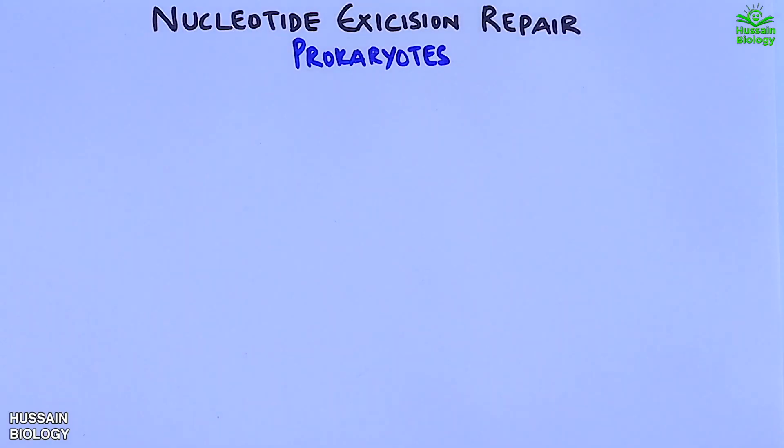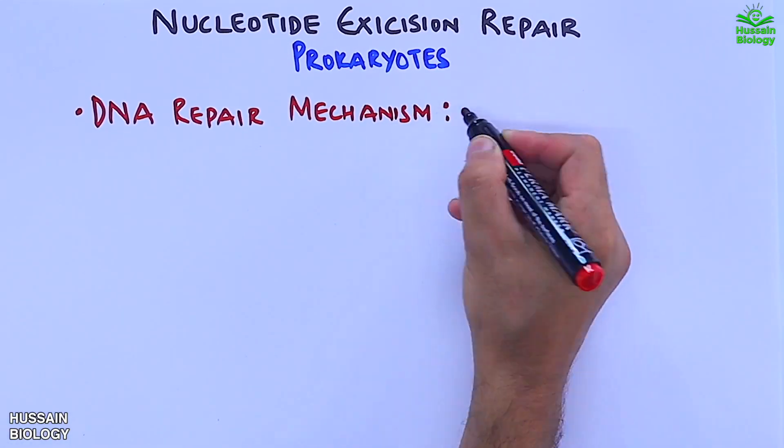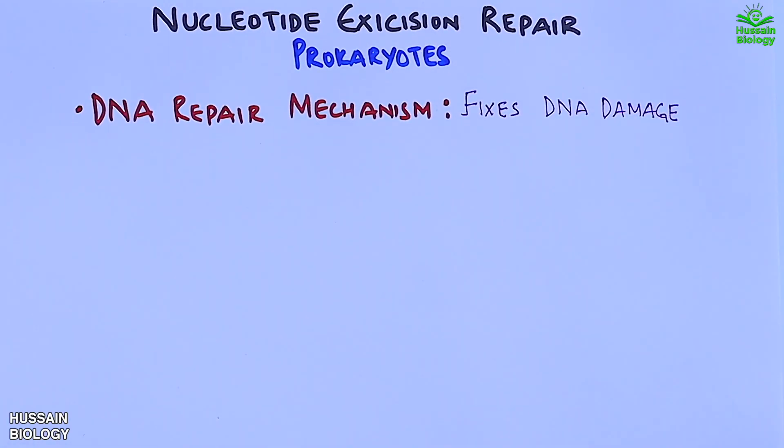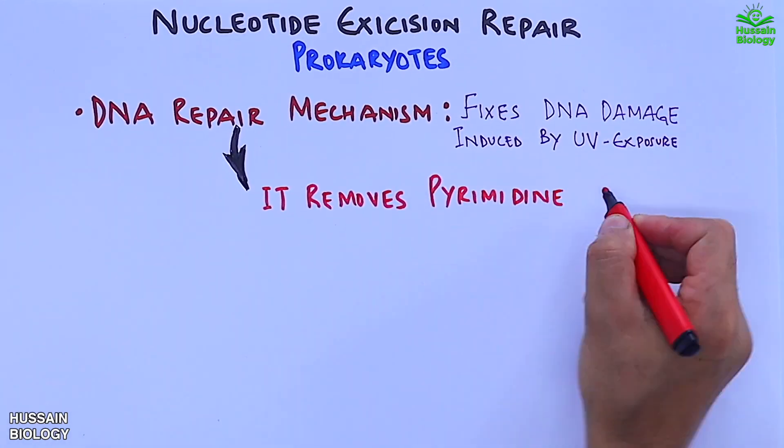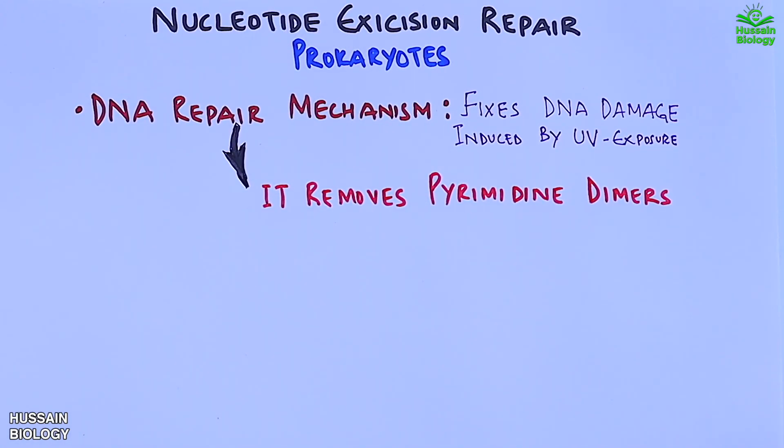In this video we will be discussing nucleotide excision repair in prokaryotes. This is a type of DNA repair mechanism which fixes DNA damage induced by ultraviolet exposure. This repair removes pyrimidine dimers, especially the thymidine dimers.